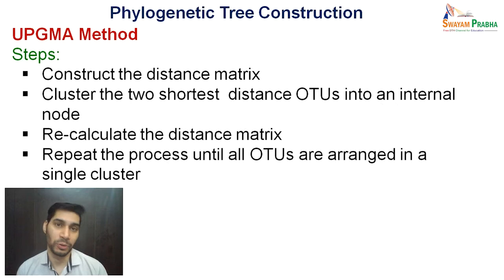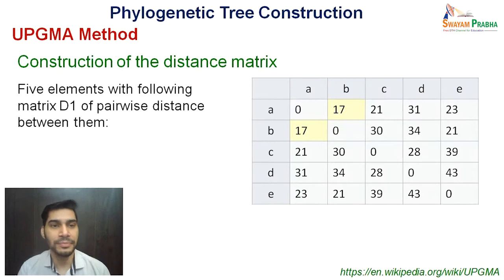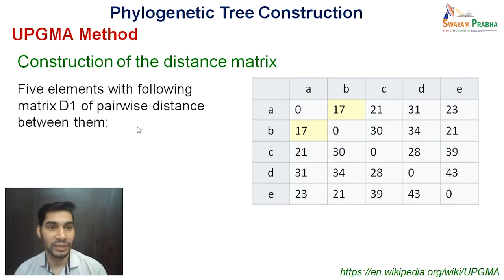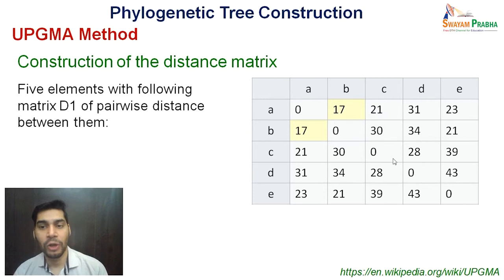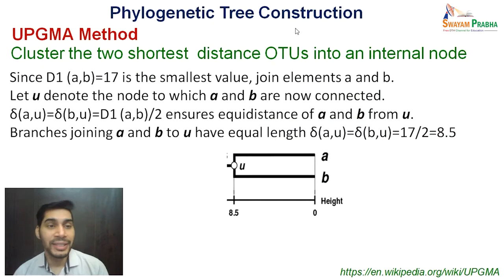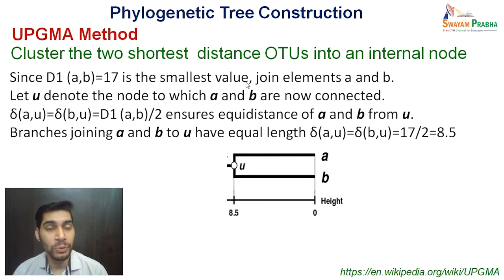Now let us see with an example. This is the distance matrix based on molecular sequences. There are five elements — A, B, C, D and E. The distance between A and A would be zero. A to B is 17, A to C is 21, and so on. Diagonally it will always be zero. In this matrix, the smallest distance was 17, between A and B, so we will first join elements A and B.